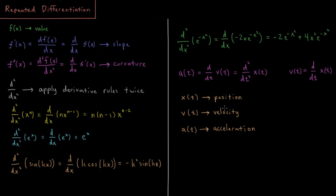This comes up a lot in physics applications, because the acceleration of a given particle as a function of time is equal to the derivative of its velocity, which is equal to the second derivative of its position. We can remember that the velocity of a particle is defined as the first derivative of its position with respect to time. So the acceleration is the second derivative of position with respect to time, or the first derivative of velocity with respect to time, where each of those functions describe the position, velocity, and acceleration as functions of time.